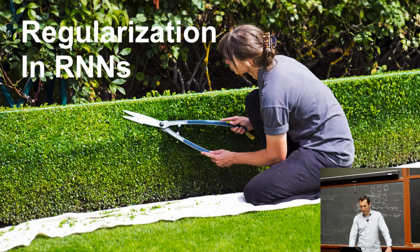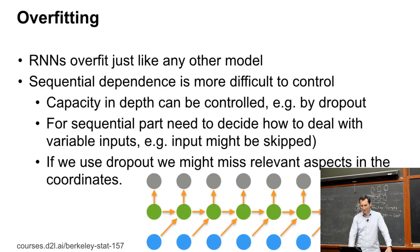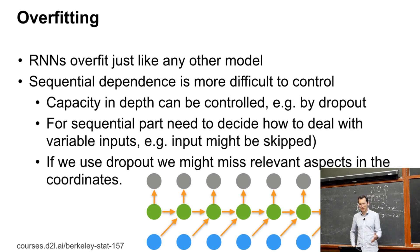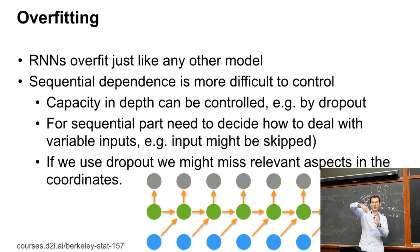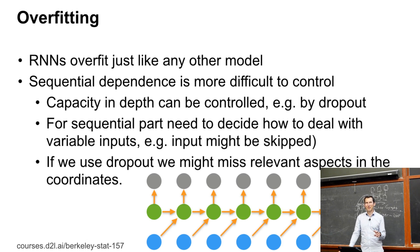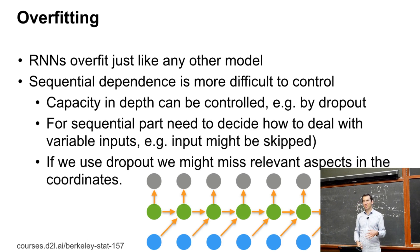Then there was the question about regularization. RNNs just overfit like any other model, and the sequential dependence is really the hard thing to control. For instance, in terms of depth as you go from one layer to the next, you can use dropout or weight decay. But the sequential part is really the messy part because one variable depends on the other, and if you're not careful you end up introducing spurious dependency or completely shredding the dependency.